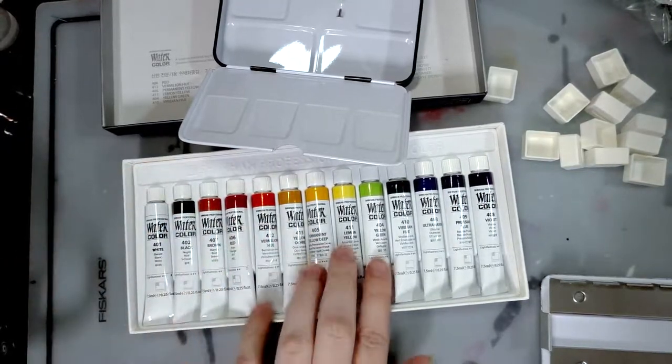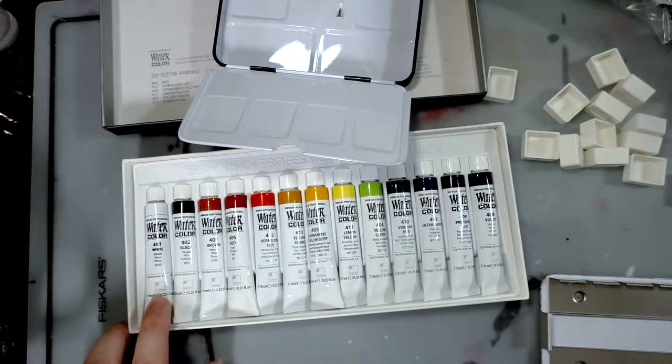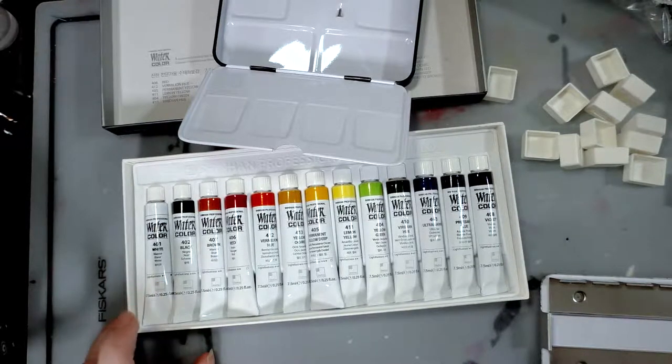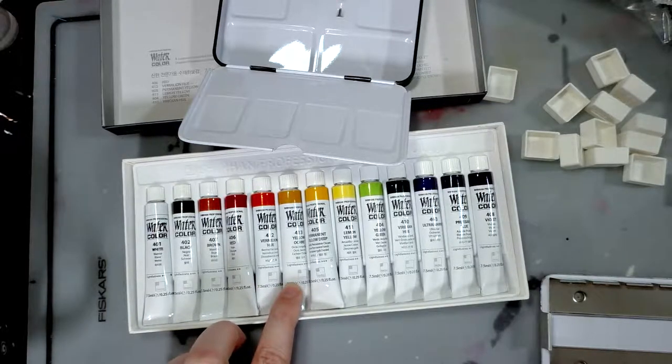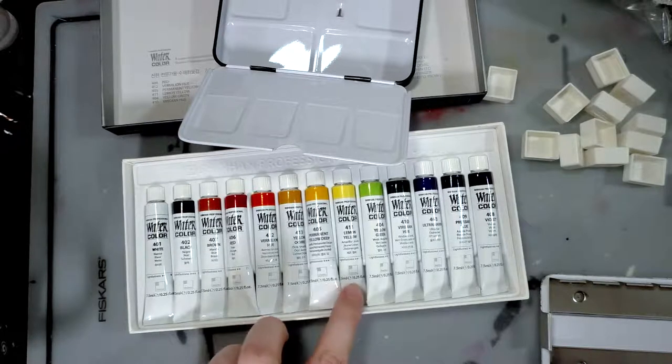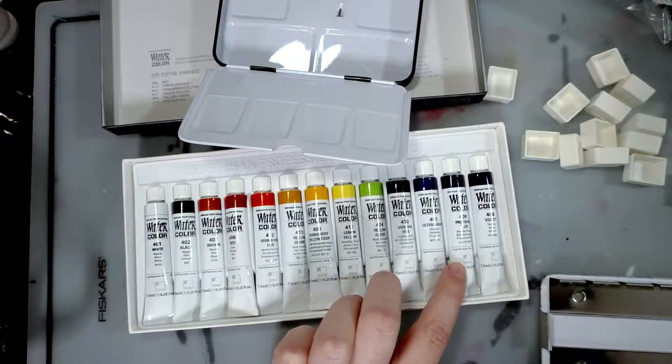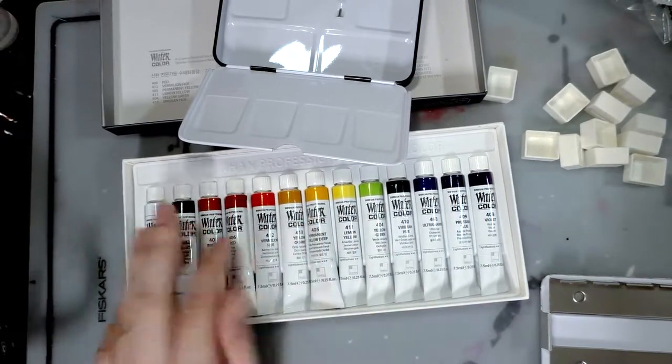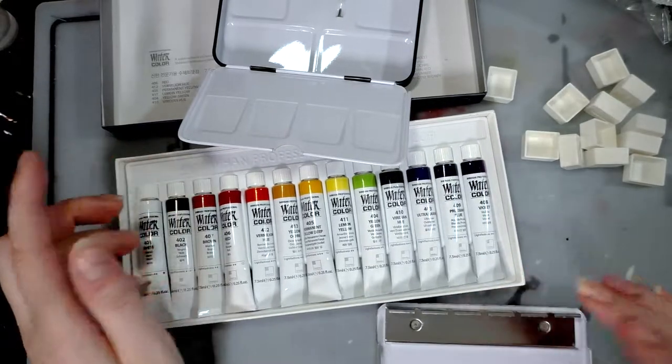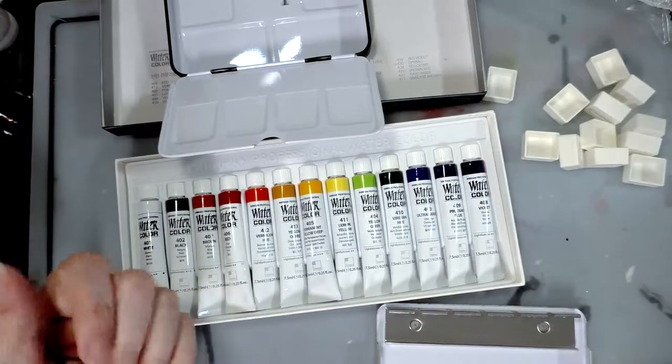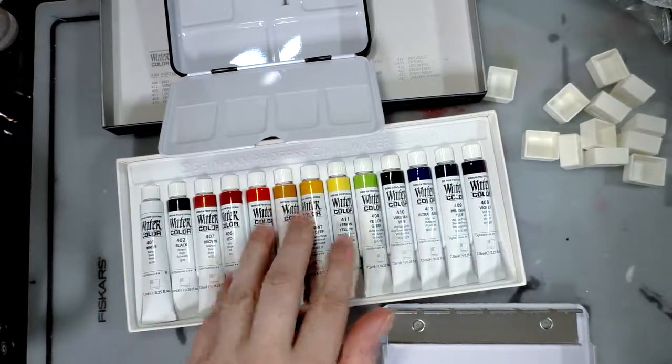Like the Turner watercolors, these have numbers and names as well as light fastness ratings, which is kind of cool. I'll go over them quickly: white 401 is a two light fastness, black is a three, brown is a two, red is a two, vermilion hue is a two, yellow ochre is a two, permanent yellow deep is a two, lemon yellow is a two, yellow green is a two, viridian hue is a three, ultramarine is a three, prussian blue is a two, and violet is a two. These are not very light fast watercolors, which would make them ideal for student watercolors but not ideal if you wanted to paint things to sell or give as gifts. I'm not the biggest fan of how this is laid out, so I'm going to reorganize it to suit my own chromatic needs.